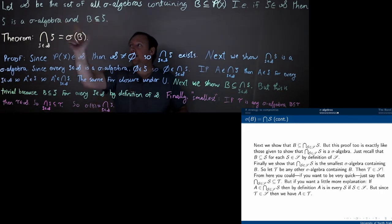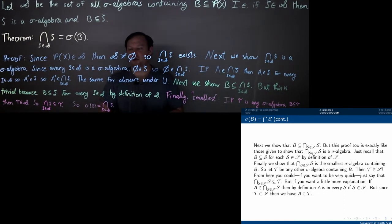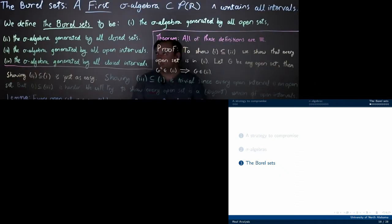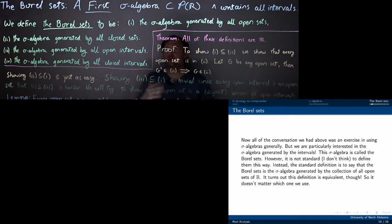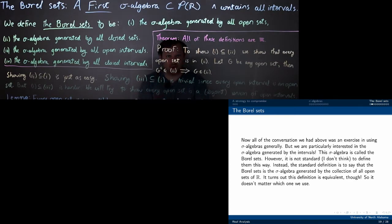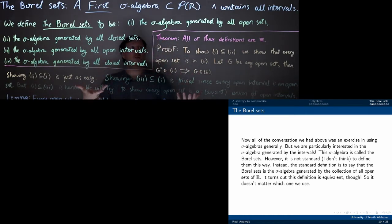We now know that no matter what X you pick, no matter what B you pick contained in the power set, the smallest sigma algebra containing B exists and is equal to this intersection. Next we're going to put this to use. We're talking about the sigma algebra because we want to put a restriction on the domain of M*, hoping that by performing this restriction we will get countable additivity. Our notion of well-behaved is being a sigma algebra. So let's try to get some sigma algebra on the real numbers which is not just the power set.